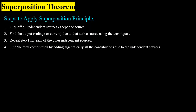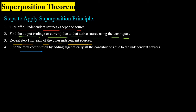Now we will study the steps to follow for the superposition principle. Step 1: turn off all independent sources except one. Step 2: find the output voltage or current due to the active source using the most convenient technique. Step 3: repeat step 1 for each remaining independent source. Step 4: find the total contribution by adding all the individual contributions from each independent source.